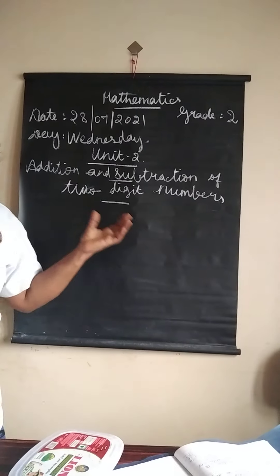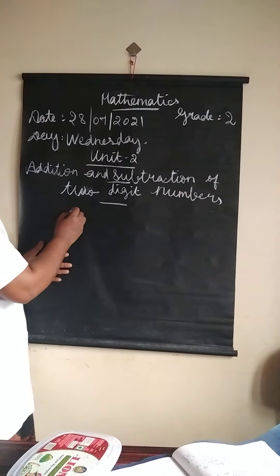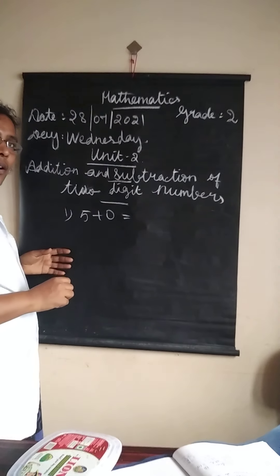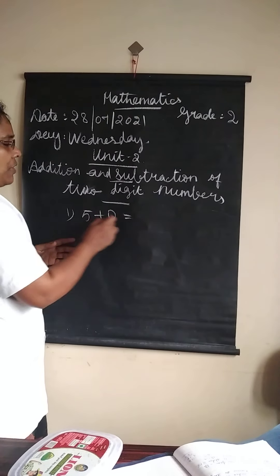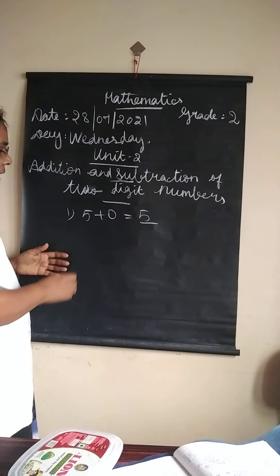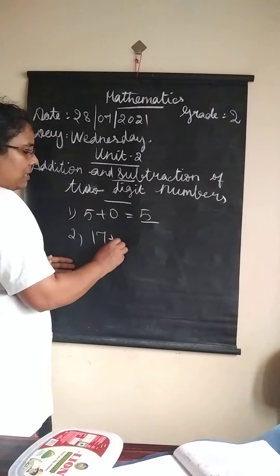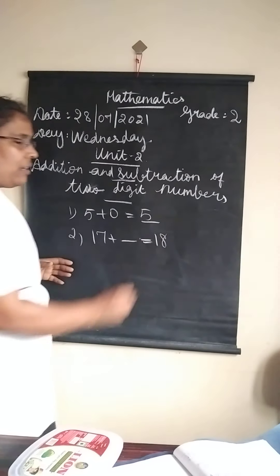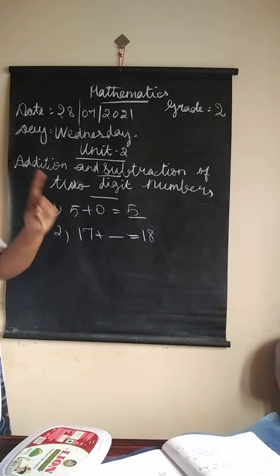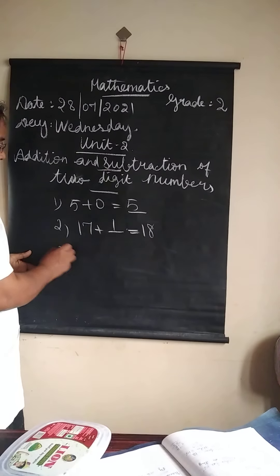Shall we revise some questions from there? Listen to the fill-ups, first one. What is the answer for 5 plus 0? If we add any number with 0, the answer is the same number. Listen next: 17 plus blank equals 18. What will come here? 17 plus 1 equals 18.